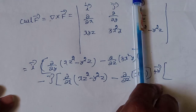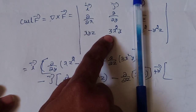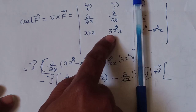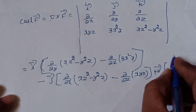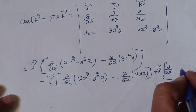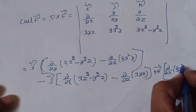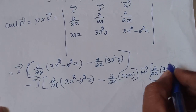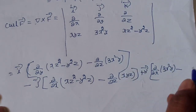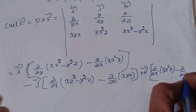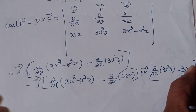For the k-vector, first row third column: product of main diagonal is d/dx of (3x²y), minus product of off-diagonal which is d/dy of xyz. This completes the k-vector component of the curl determinant.